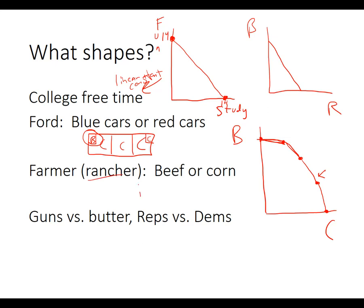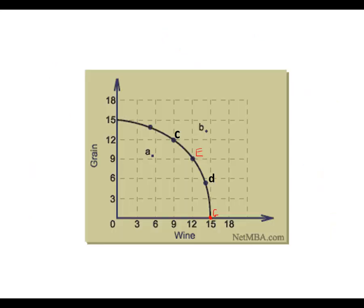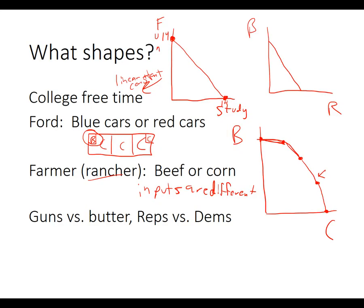So basically: if the two goods require different inputs, the PPF will have the familiar bowed-out shape. If the inputs are exactly the same, it's going to be a straight line. I'll table that discussion for another time. There's more on guns and butter in another video — thank you.